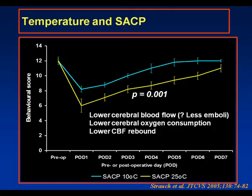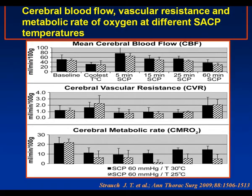Further data in a similar model looked at two SACP temperatures—30 and 25 degrees centigrade—at constant perfusion pressure. During cooling there is a profound fall in total cerebral blood flow, which then increases with a 10 mL/kg flow rate for SACP. Vascular resistance rises during cooling but falls during the SACP period, and the cerebral metabolic rate is much lower in the lower temperature SACP group. This lower blood flow, with its potentially protective effects, is seen in all areas of the brain.